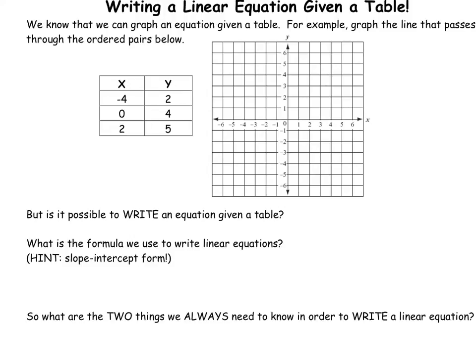So we're going to graph these points: negative 4 and 2, right about up in here. Bam, point. Now we go to 0, 4, right up in here. Everyone gets that these would be coordinate pairs. They can be written like this. So this would be negative 4, 2. So is it going toward the Y-intercept? It is — it does tell us the Y-intercept. And then we have 2 and 5.